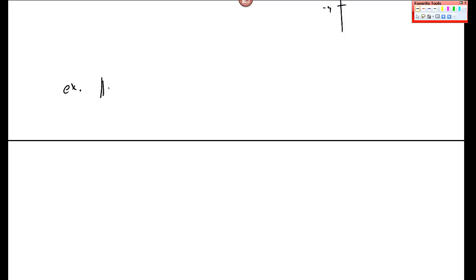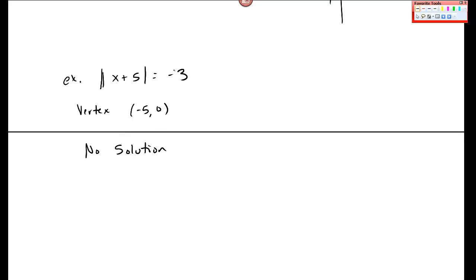So sometimes you'll see this absolute value of x plus 5 is equal to negative 3. This never happens, right? This is a graph that's been shifted left by 5, but the vertex is still at negative 5, 0. That's my lowest point. And then negative 3 is way below that. This has no solution. There's no way for it to get positive value here equal to a negative value on the right.